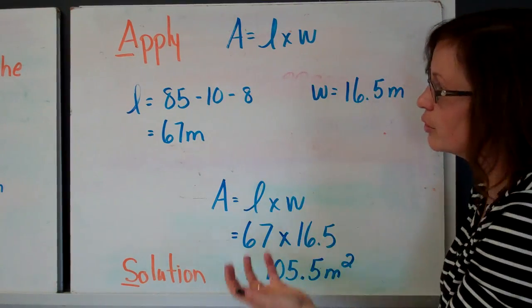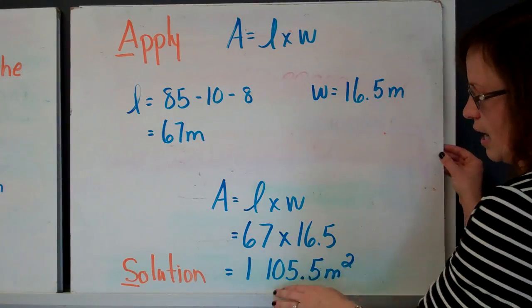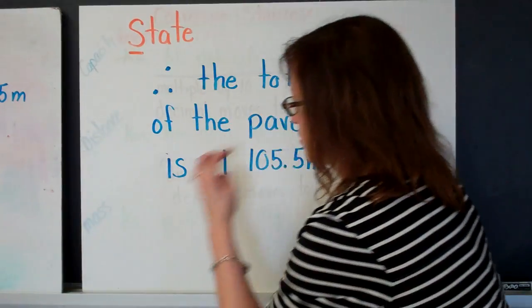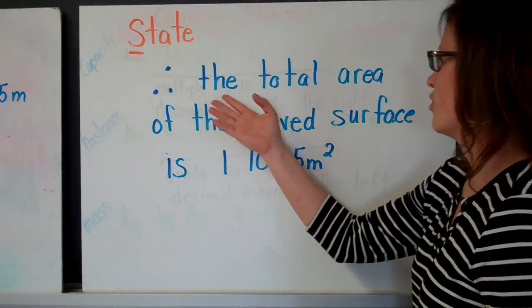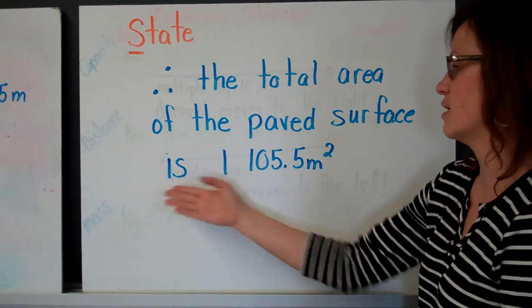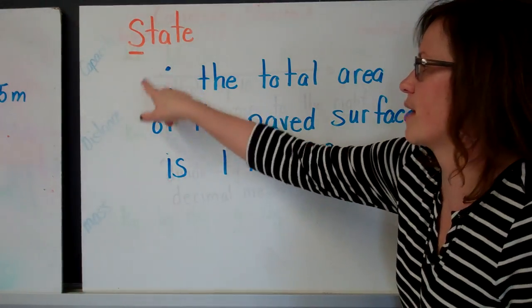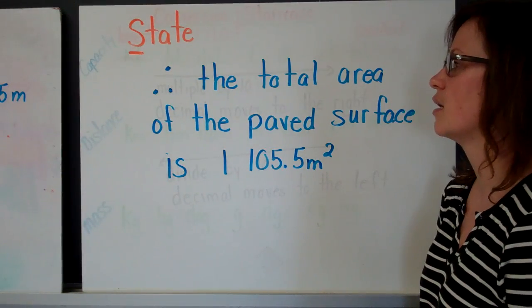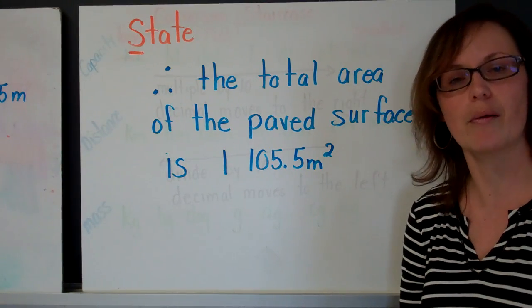So I show how I use my given information to find my required information and come up with my answer. And the last step is state your answer. Put your solution into a sentence. Therefore, the total area of the paved surface is 1,105.5 meters squared. Remember, that symbol stands for therefore, and you can use that in your statement of your answer. And that's how to use the GRASS method to solve a word problem.